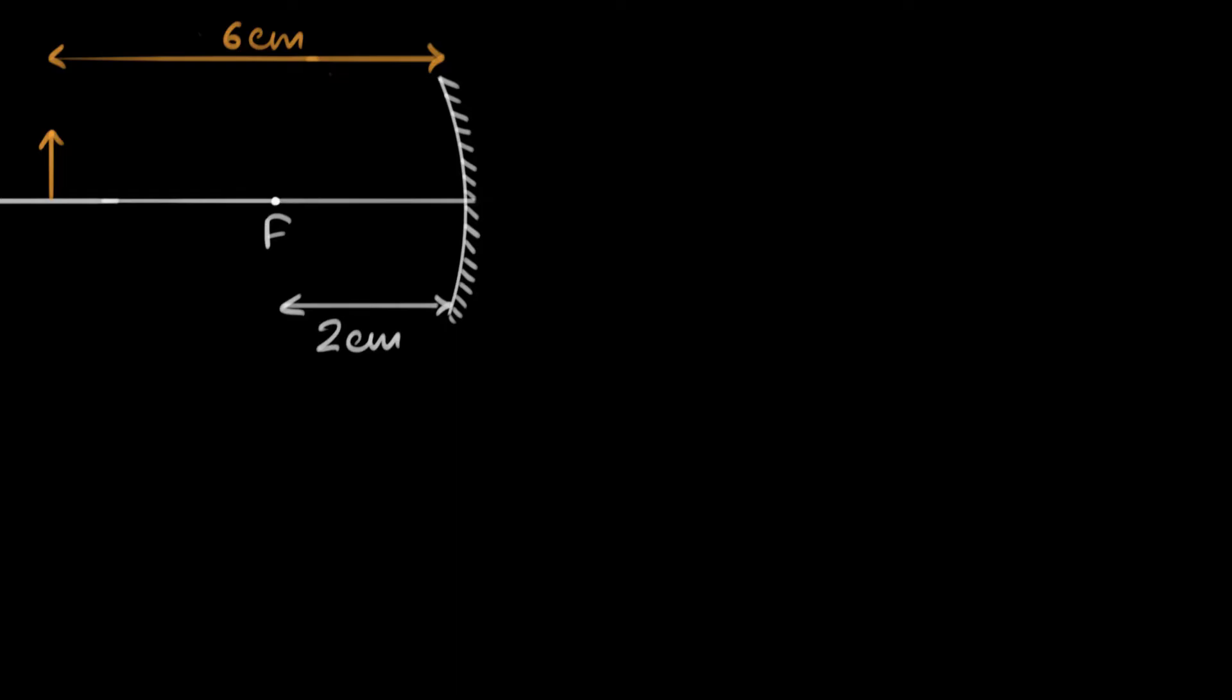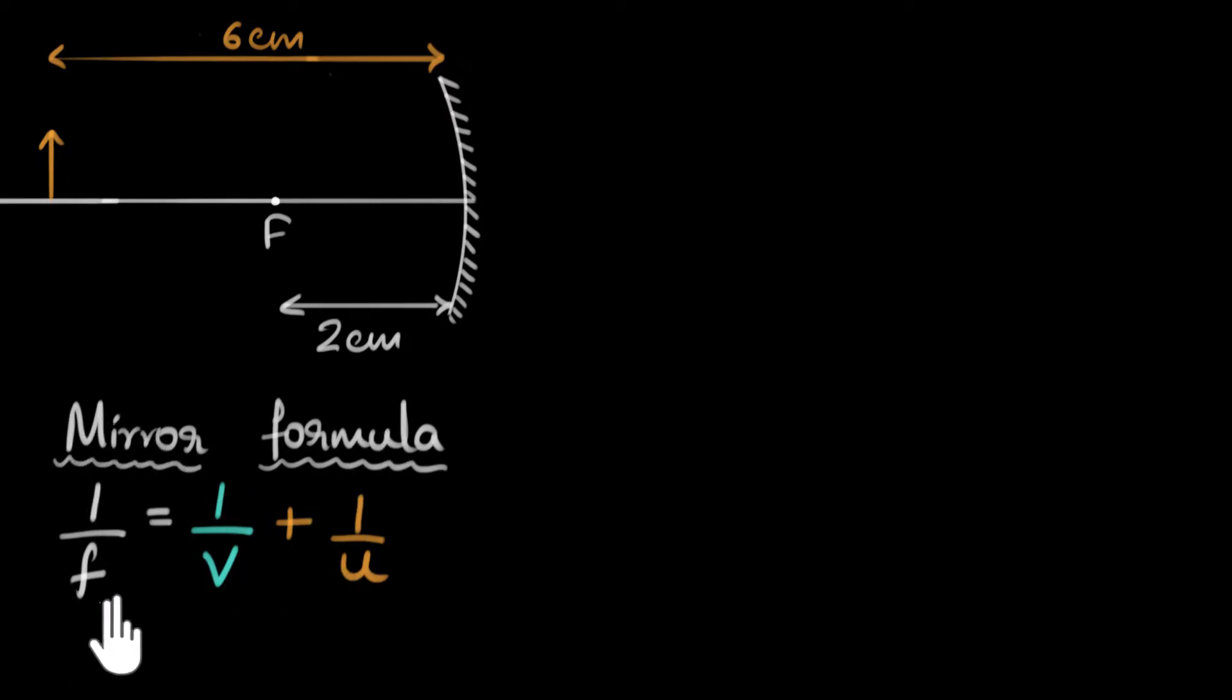That one formula which is going to help us solve problems like this, that formula looks like this and it's called the mirror formula for obvious reasons, because it works for mirrors. Let's see what these things are. F stands for the focal length. V is the image distance. And U is the object distance. These are the letters that we usually use for mirrors.